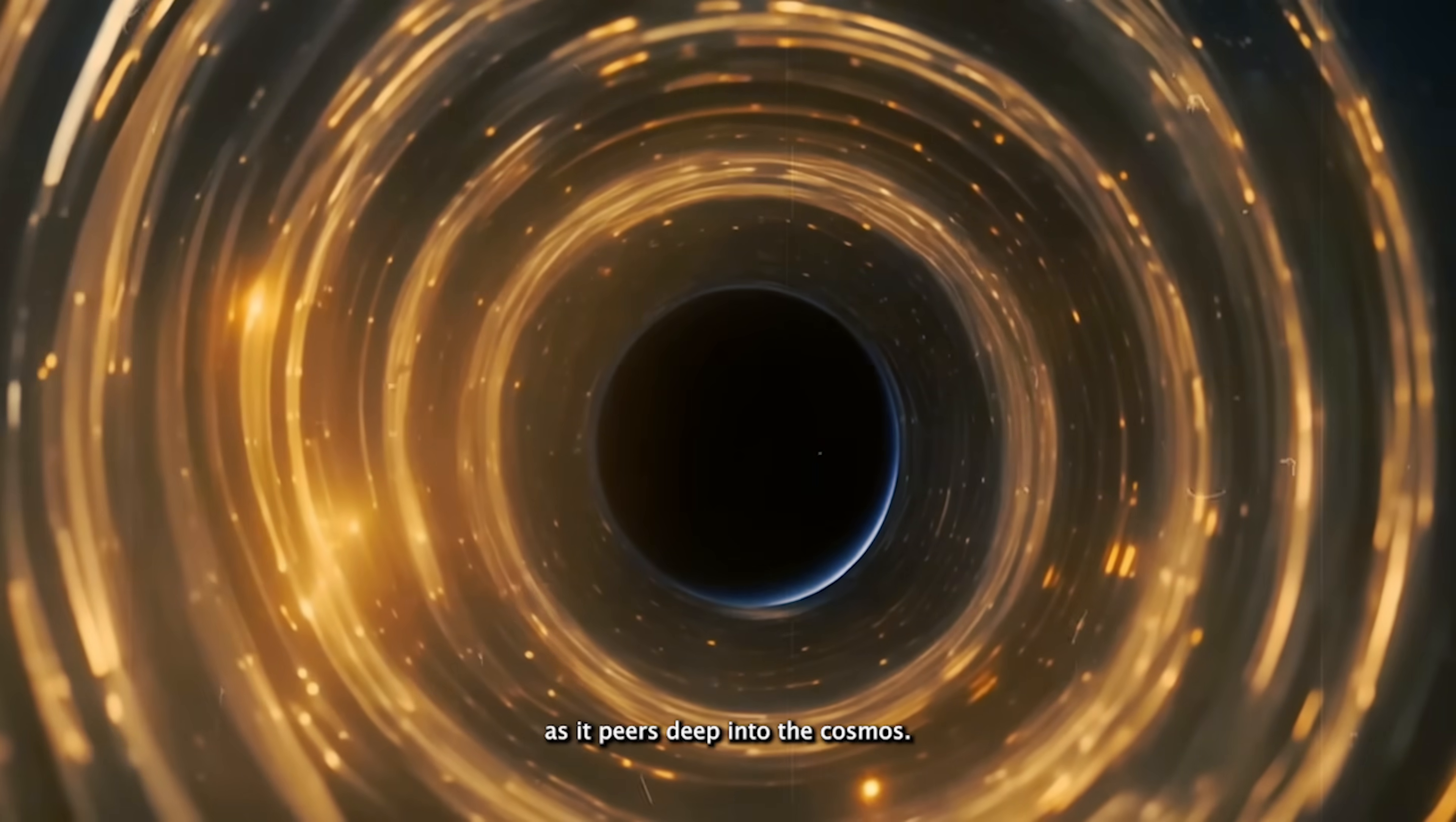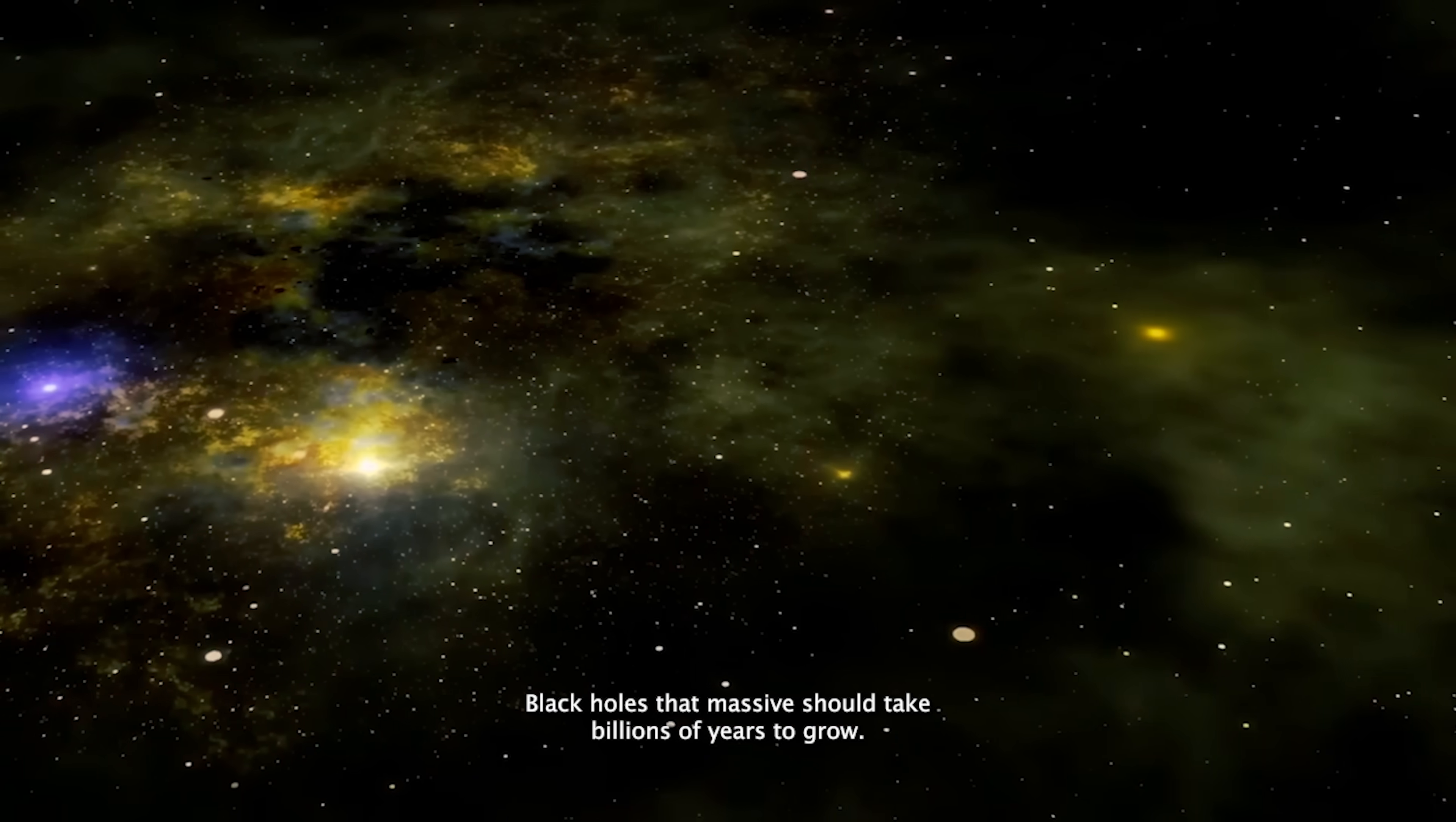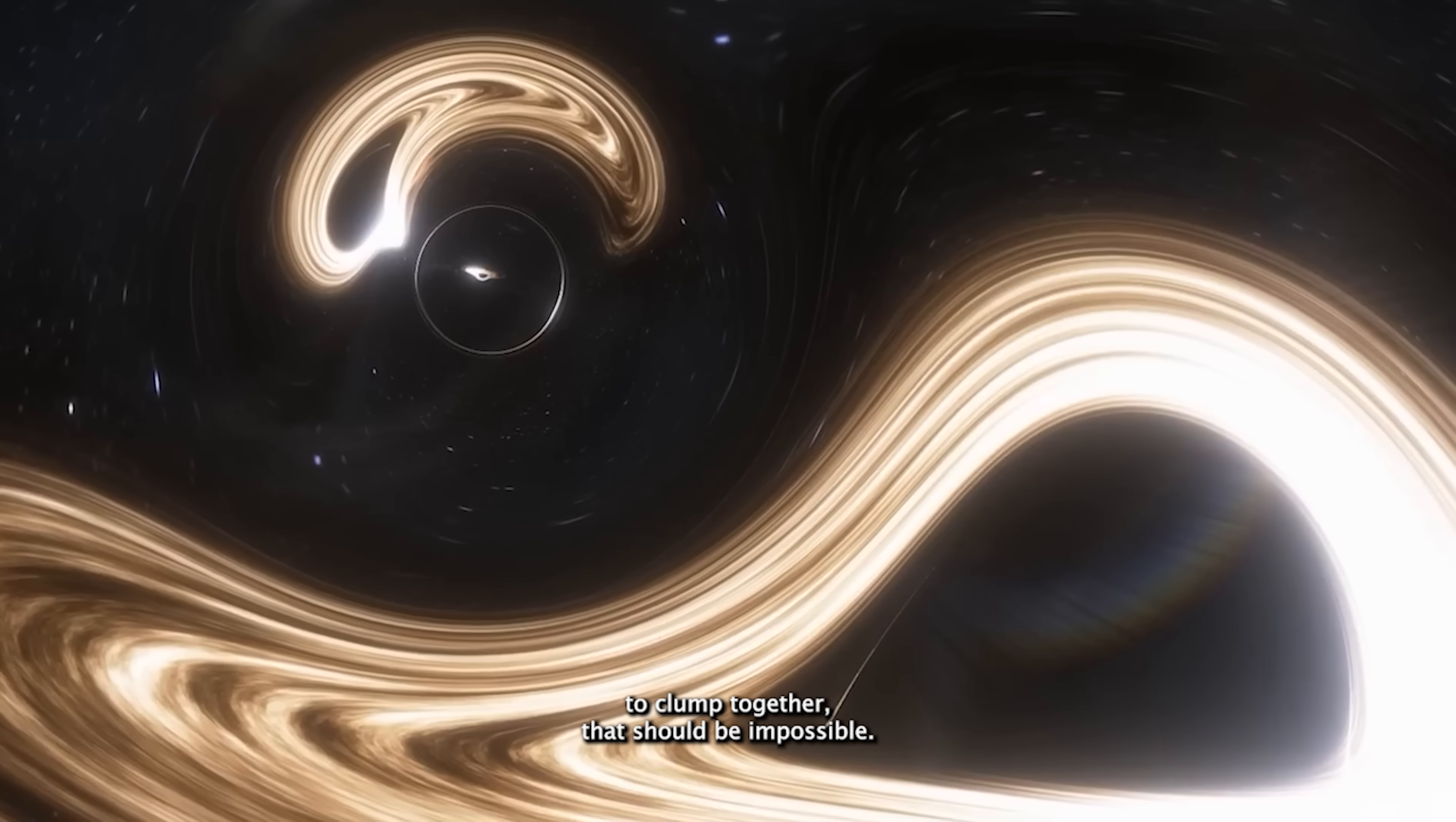As it peers deep into the cosmos' earliest moment, the Webb Telescope has uncovered something that defies all expectations. Enormous black holes already in existence just a few hundred million years after the Big Bang. These behemoths are just as baffling as the early mature galaxies we've discovered. According to everything we thought we knew, black holes that massive should take billions of years to grow. Typically, black holes form from collapsing stars or gradually build up mass over eons by pulling in gas and dust. But the Webb Telescope is now spotting fully grown supermassive black holes in the universe's infancy, when stars were scarce and matter was only beginning to clump together. That should be impossible.